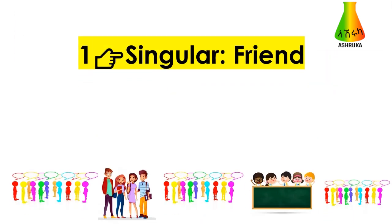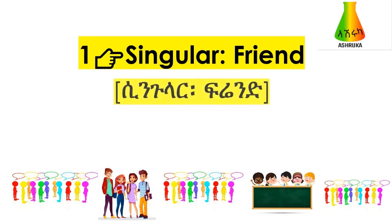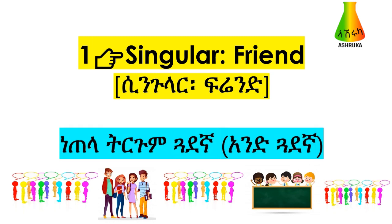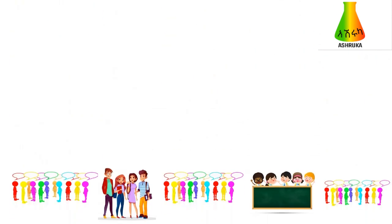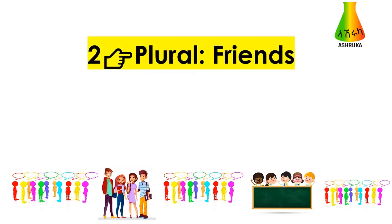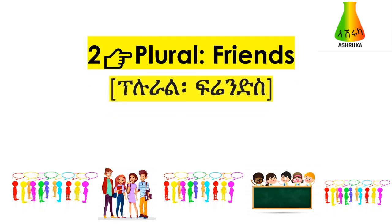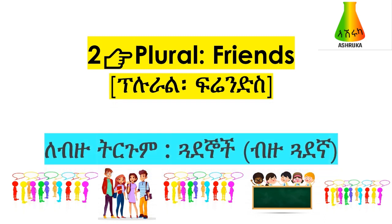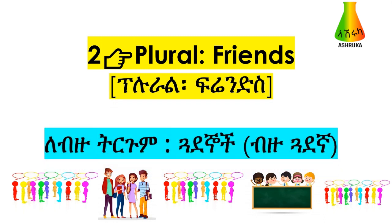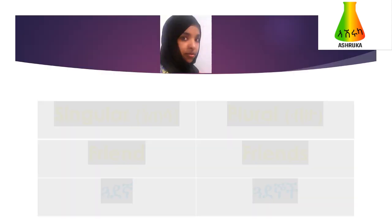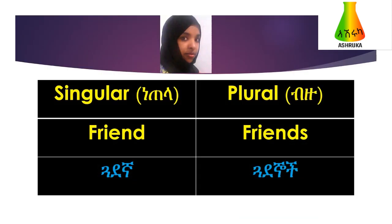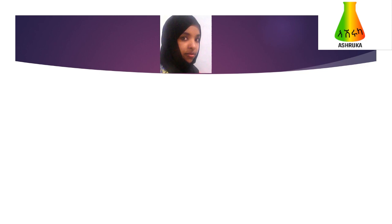An example: singular — friend. Friend is a quaterna (singular). Plural — we, anya, su. Friend is singular; we, anya, su are plural.